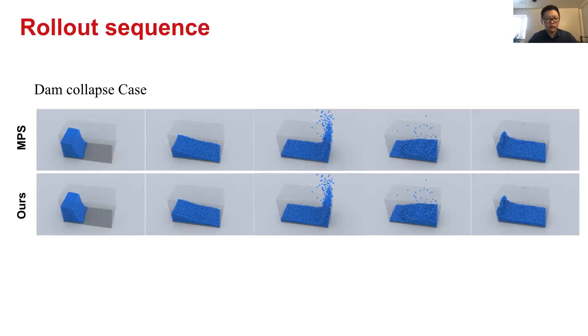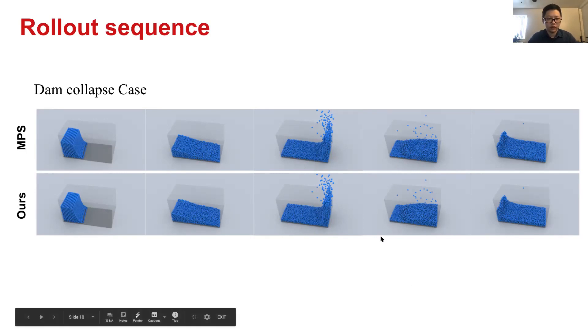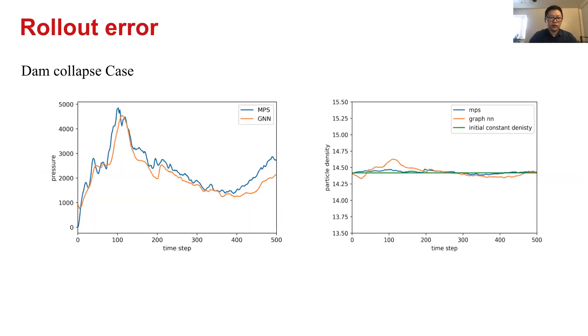Through this visualization of rollout sequence, we can see that our model's result has little difference with the ground truth solver. The dam collapse case here, our model's prediction agrees perfectly with the result from the ground truth solver. And as for the physical detail behind it, we can see that the pressure prediction, the average pressure of the whole fluid field, our model's result agrees quite well with the ground truth solver's result.